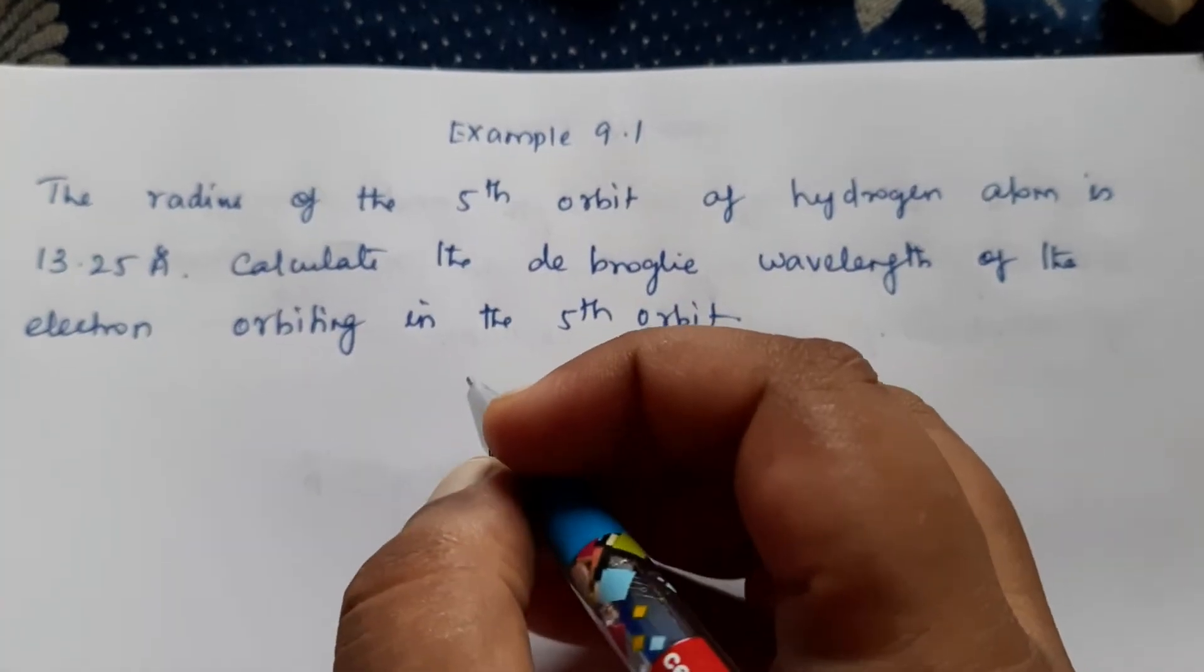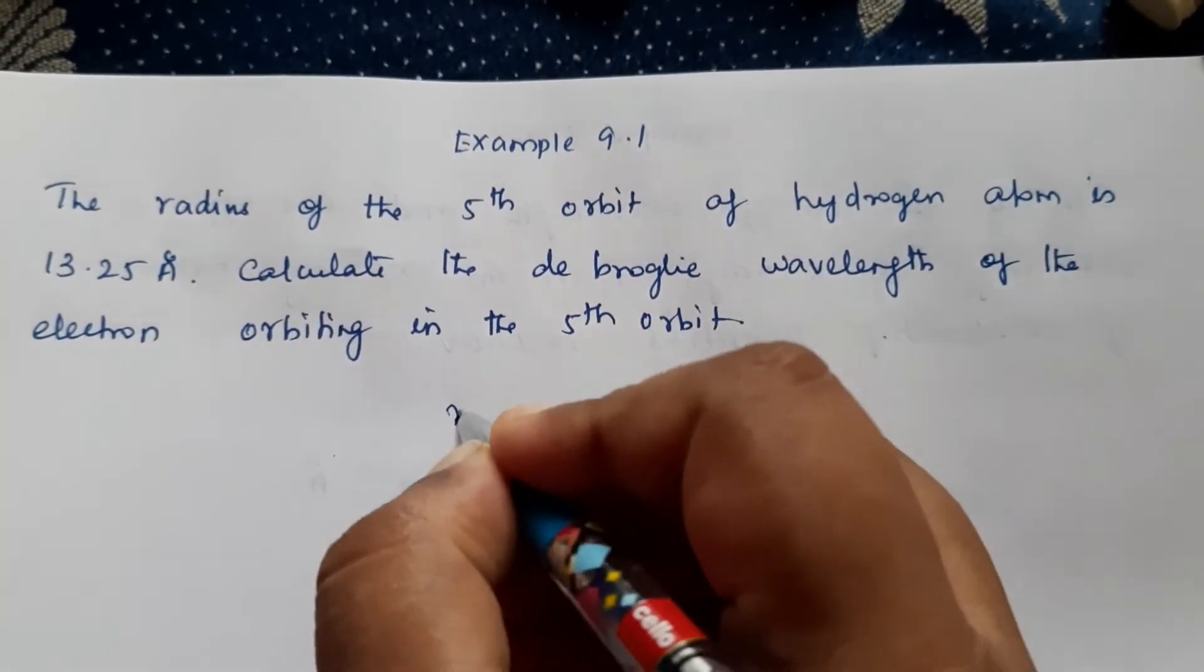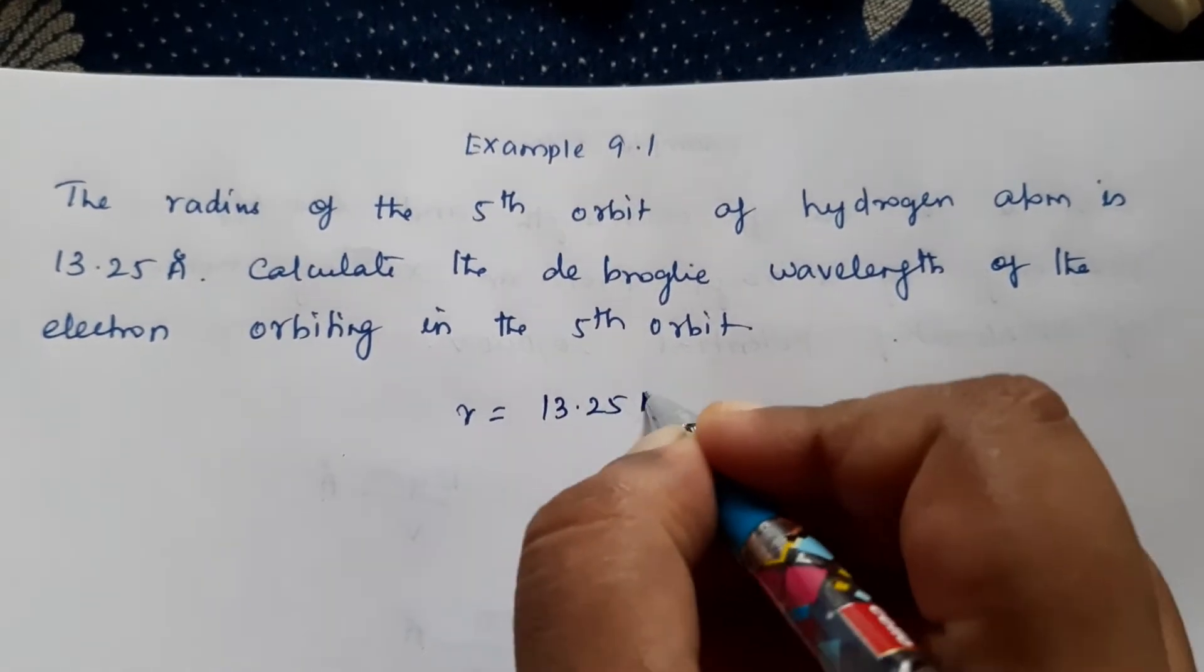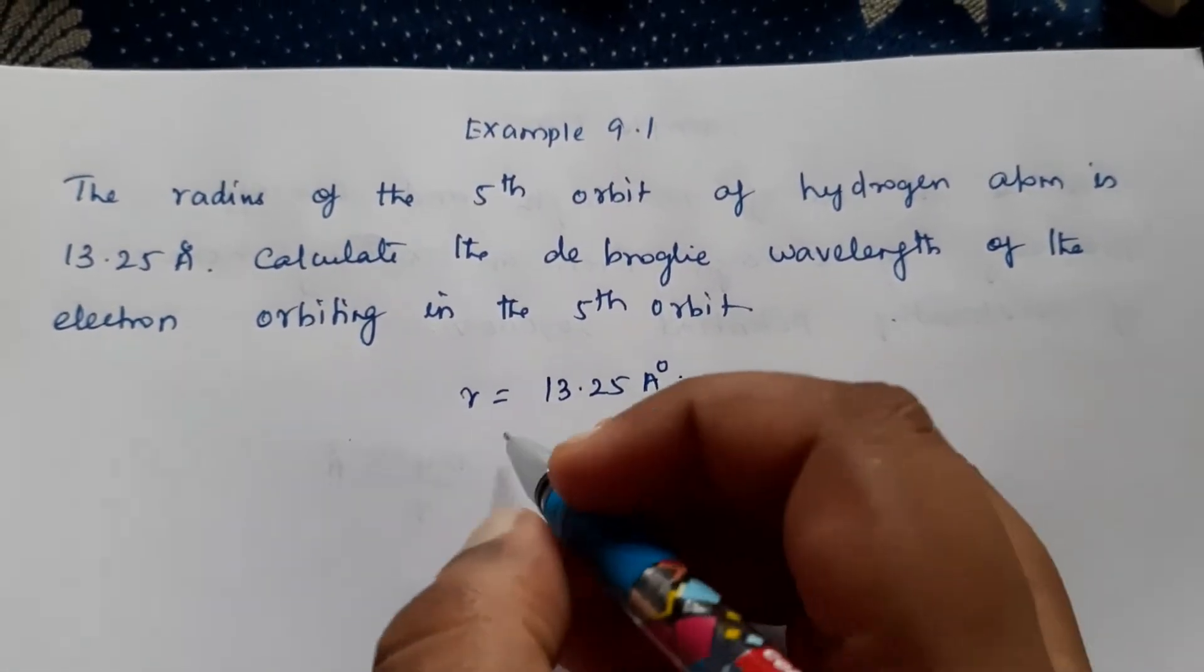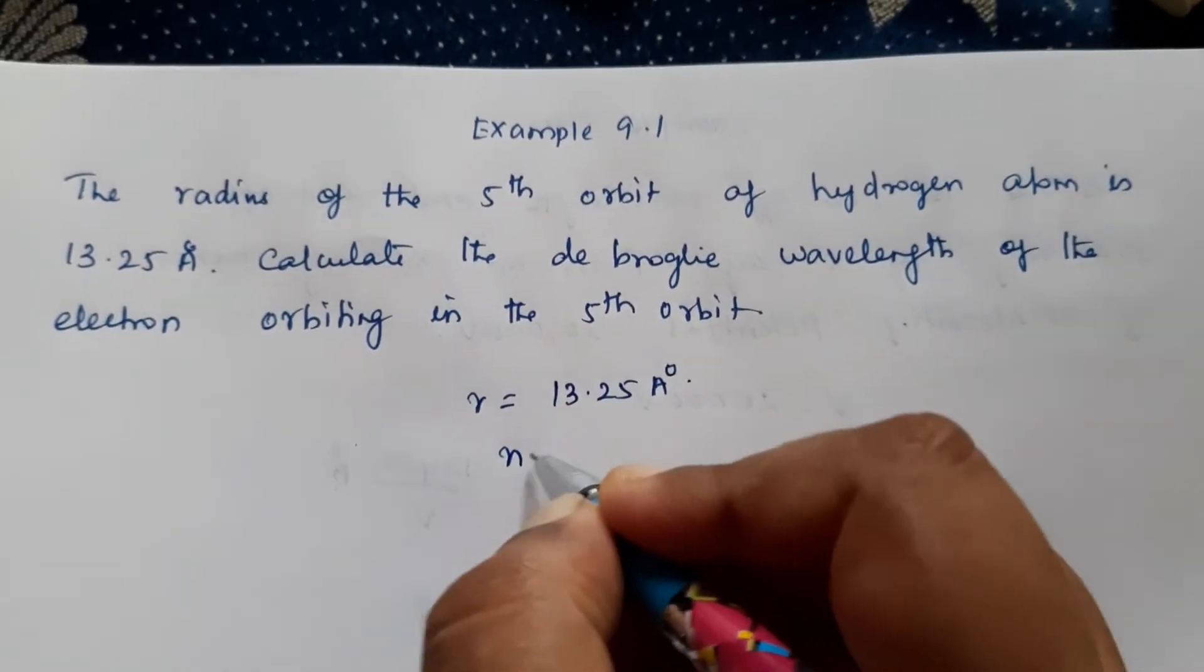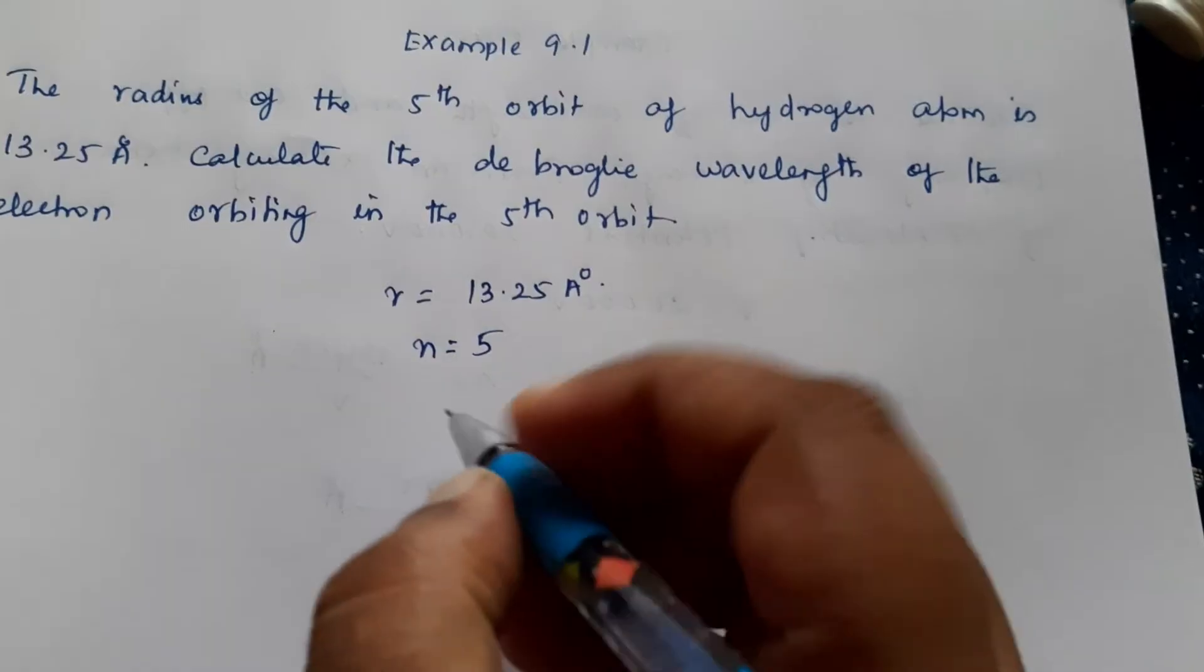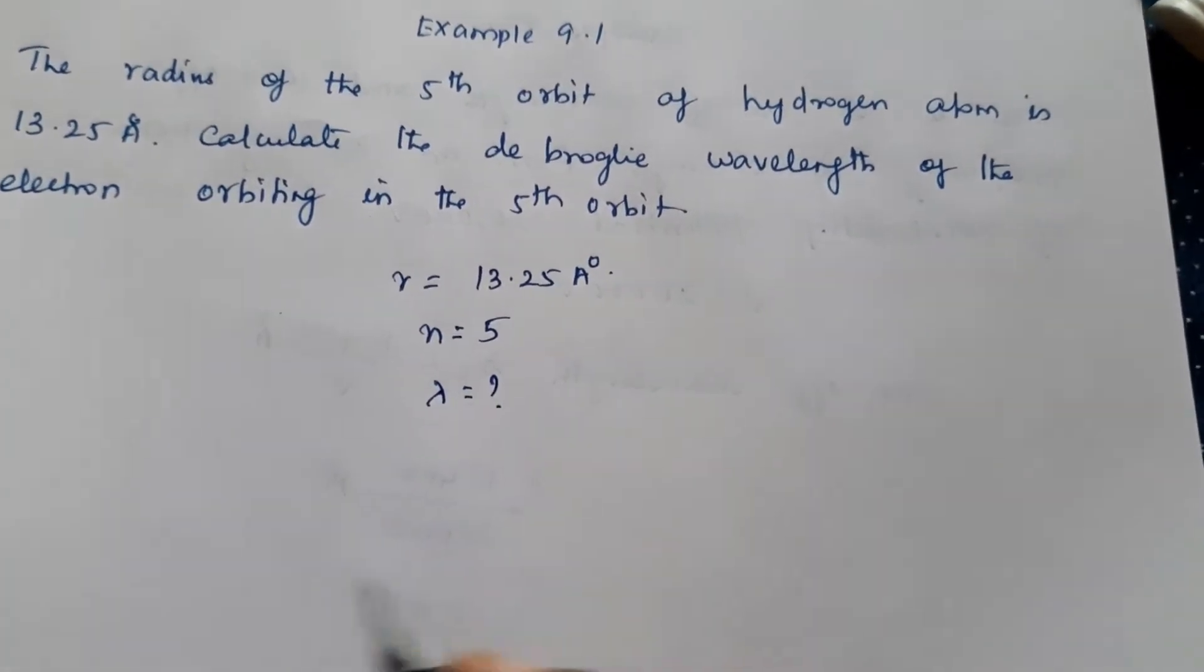What is the data given? The radius of the hydrogen atom in fifth orbit, r value is given as 13.25 Angstrom, and the n value is 5. We have to calculate lambda, the wavelength.